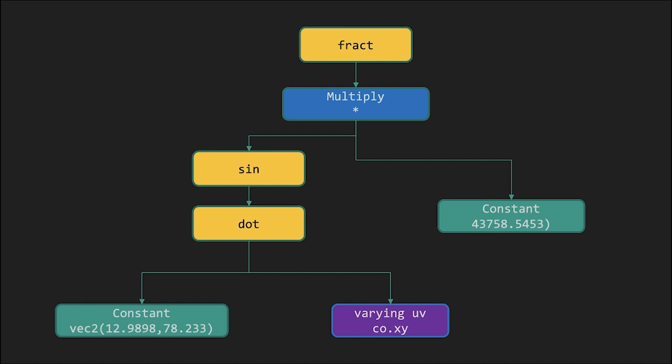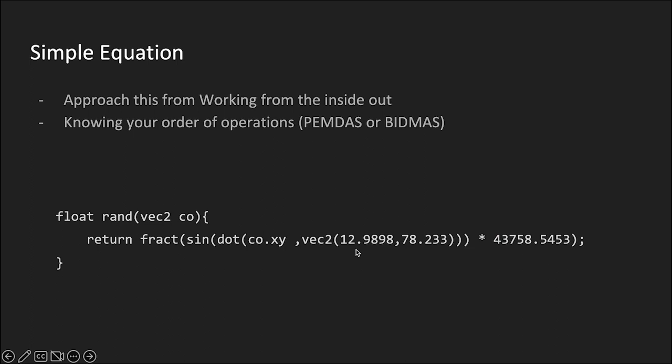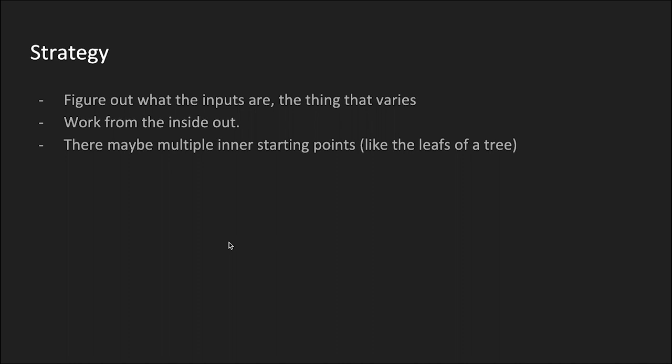The abstract syntax tree represents the order of operations — what happens first. The two arguments at the bottom feed into a dot product function, which is an argument into a sine function. You might think: do I have to manually build this tree every time? I wouldn't go that far. A useful technique is, instead of going left to right, start from the inside and work your way out — starting at the leaves of the tree.